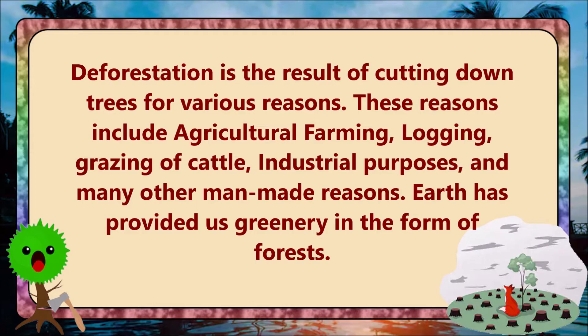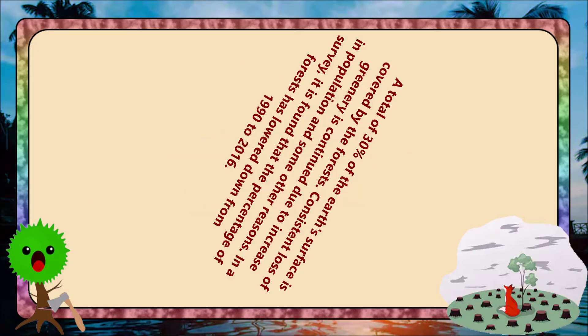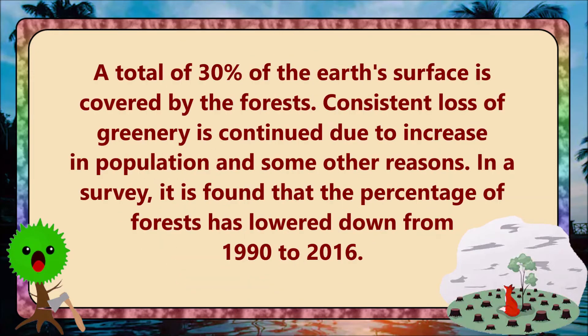Earth has provided us greenery in the form of forests. A total of 30% of the Earth's surface is covered by forest. Consistent loss of greenery is continuing due to increases in population and some other reasons.